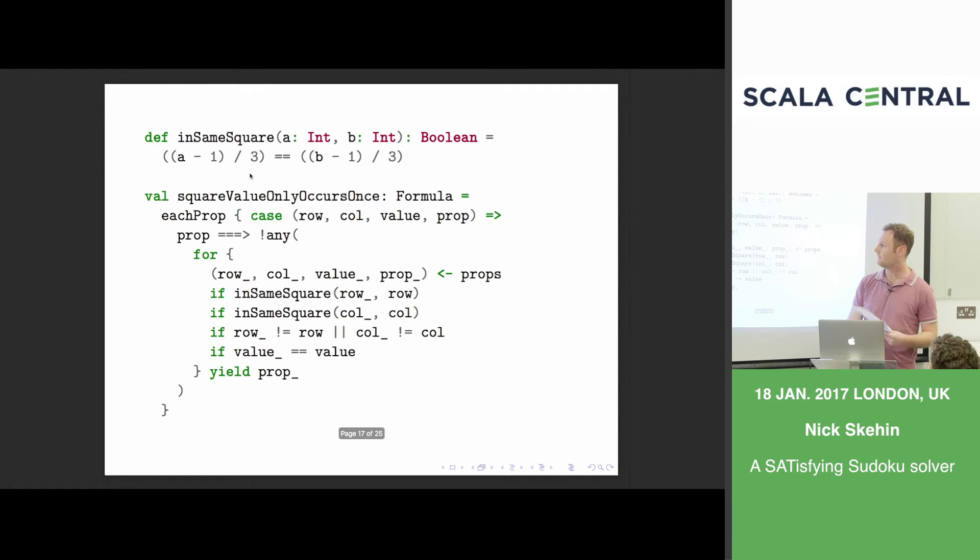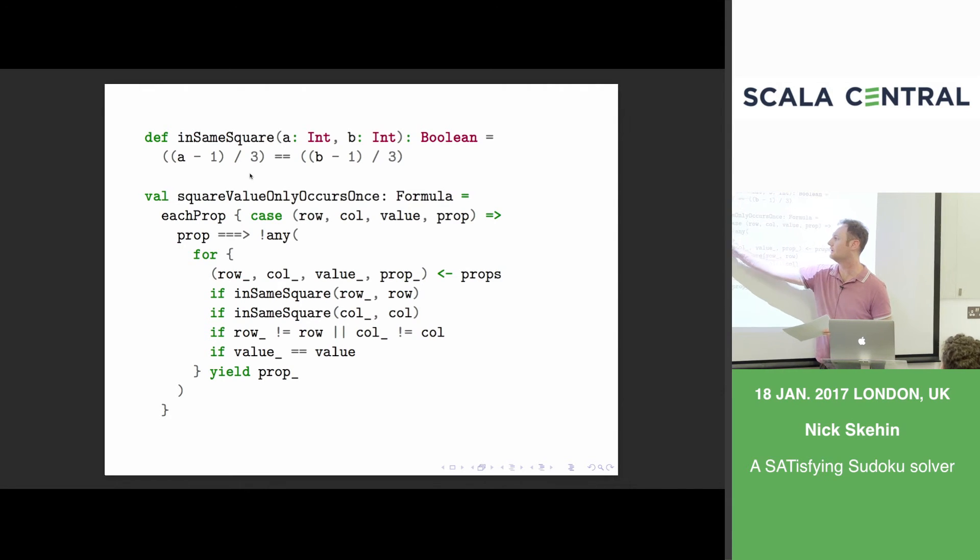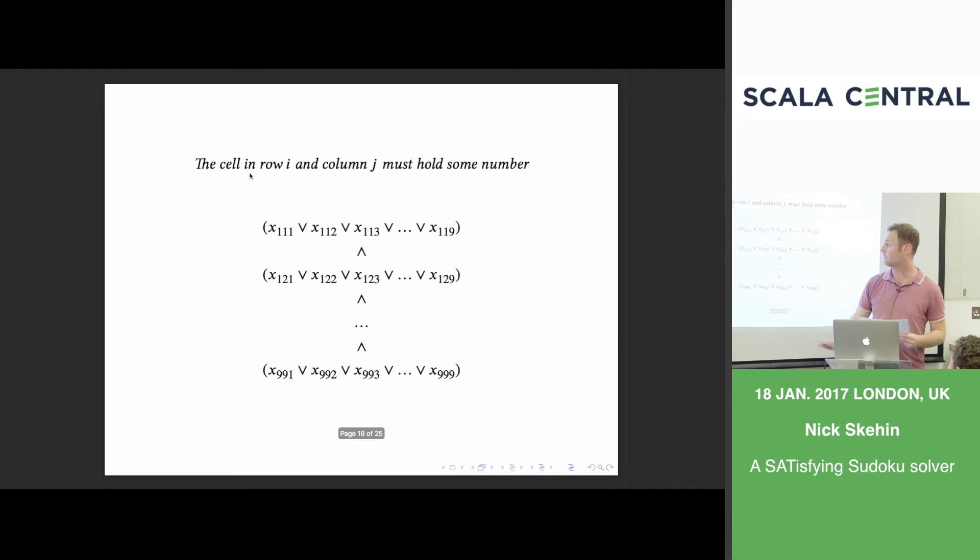So there's one more constraint. At this point we can try and build a model out of this. We have encoded the rules of Sudoku. But the problem is that a valid solution is to set them all to be false. Because all we've said here is if this is true, then these other things must not be true. So it's valid to have nothing true at all. So we have to have one more constraint, and that's just that every cell must hold some value. So here we just select the value for every cell. This is in the top left cell, it must have a one or two or three or four or nine.